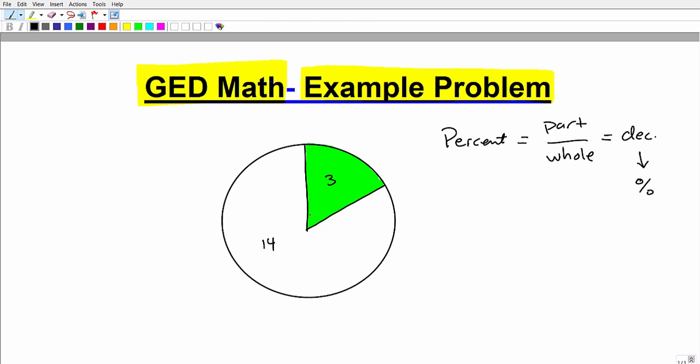This green slice here is what part of this circle? It's three. This could be total number of students or whatever the case is. So the part is three. What is the whole? What's the entire circle? Many of you probably put 14, but you'd be incorrect. The entire circle is 14 plus three, so that's 17.